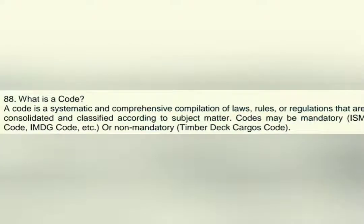What is a code? A code is a systematic and comprehensive compilation of laws, rules and regulations that are consolidated and classified according to subject matter. Codes may be mandatory, like the ISM code or IMDG code, or non-mandatory, like the timber deck cargo code.